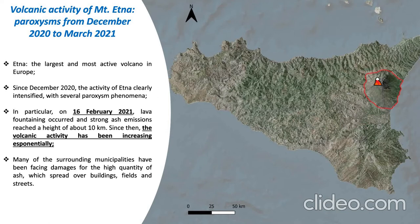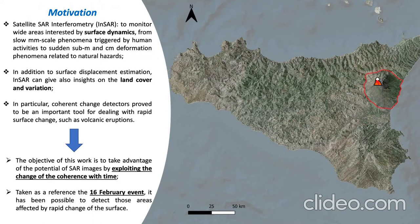InSAR is a technique that is worldwide known to be one of the most important to monitor surface deformation. But it's not only this — it's also been useful for change detection and to see the change of coherence in time. The object of this work is to exploit the change of coherence before and after the important event of 16 February 2021.